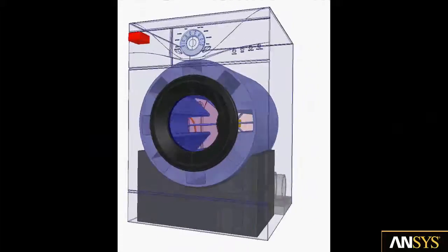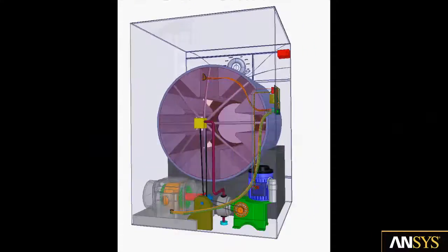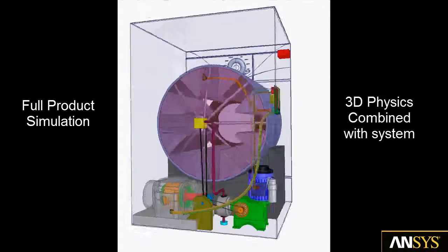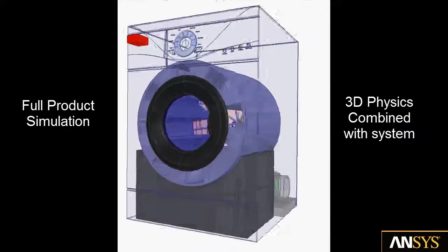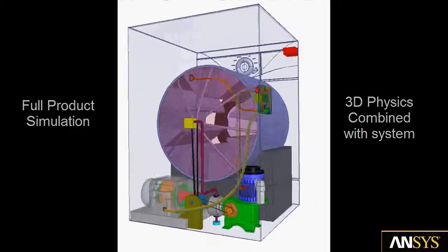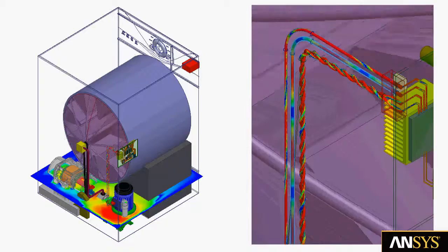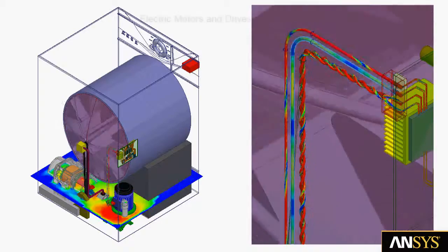In the next several minutes, we will demonstrate simulation technologies that enable full product simulation by combining 3D physics with system level analysis. The example is a washing machine that was created by ANSYS channel partner ESSS in Brazil.